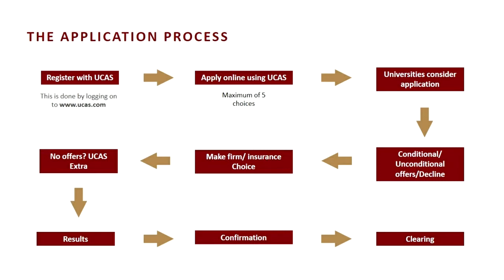Once you've got your offers back, you make your firm and insurance choice. The firm choice should be the university and course you really want to go to, with entry requirements broadly in line with your predicted or achieved grades. Your insurance choice is your first backup — a university and course you'd be comfortable going to if you didn't get the grades to progress to your firm choice.